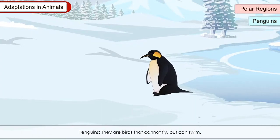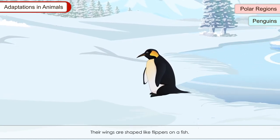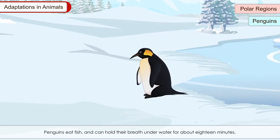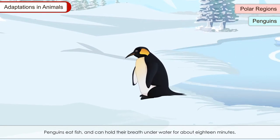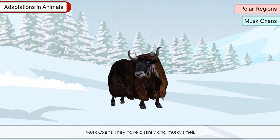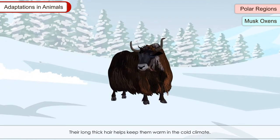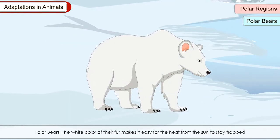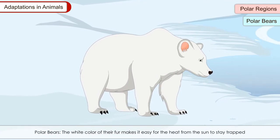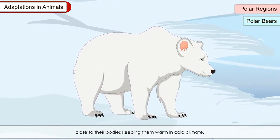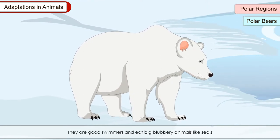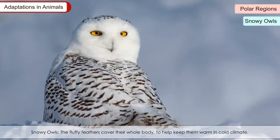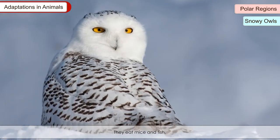Penguins: They are birds that cannot fly but can swim. Their wings are shaped like flippers on a fish, which makes it easy for them to swim but not fly. Penguins eat fish and can hold their breath underwater for about 18 minutes. Musk oxen: They have a stinky and musky smell. Their long, thick hair helps keep them warm in cold climate. Polar bears: The white colour of their fur makes it easy for heat from the sun to stay trapped close to their bodies, keeping them warm in the cold climate. They are good swimmers and eat large animals like seals.